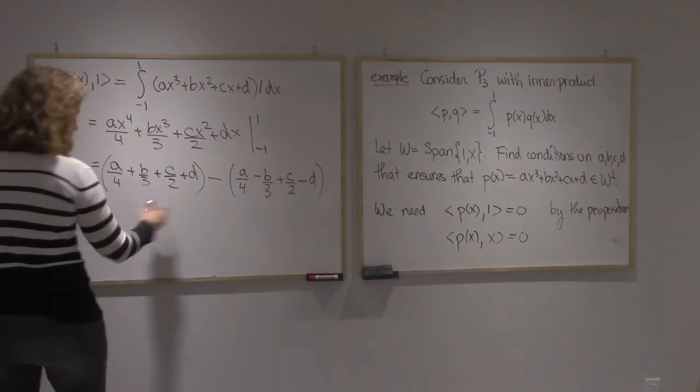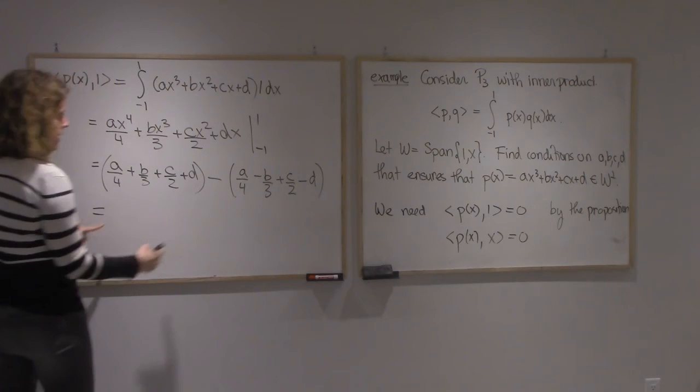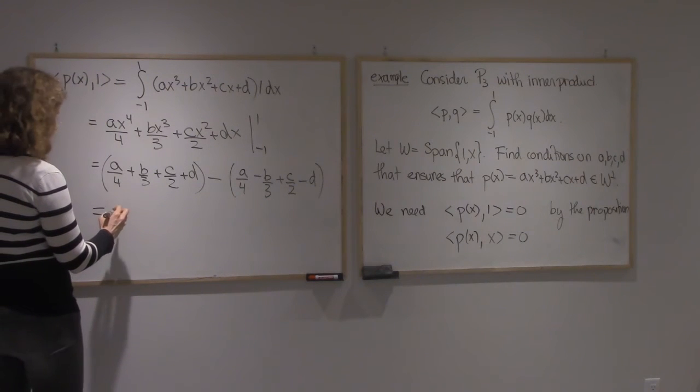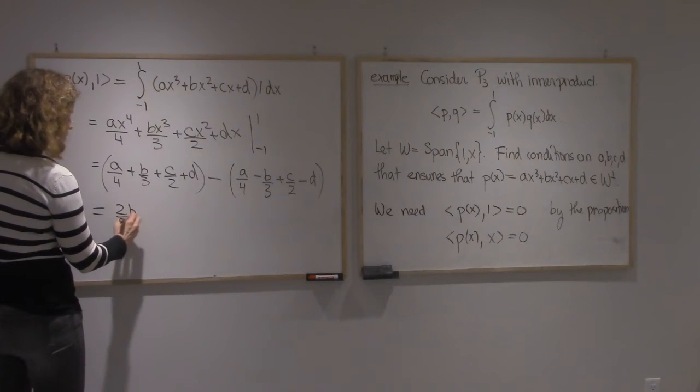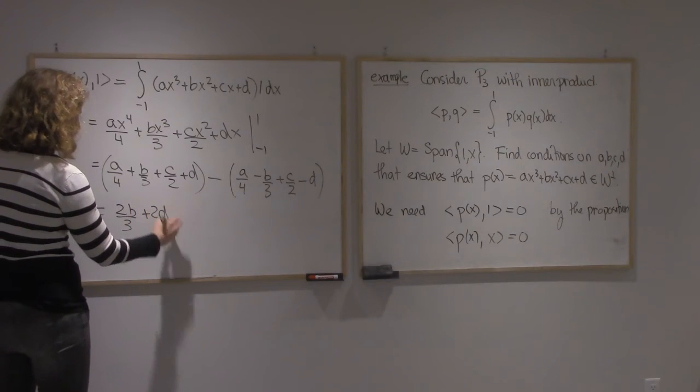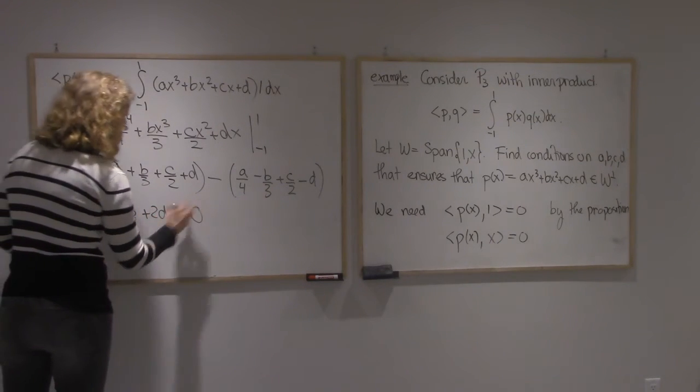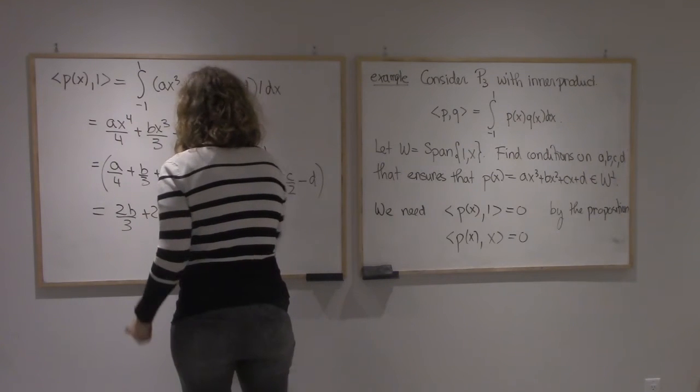And so all in all, the even terms cancel and the odd ones add. So I get 2B/3 + 2D. So we know that that must be 0, and so that's going to be your first condition.